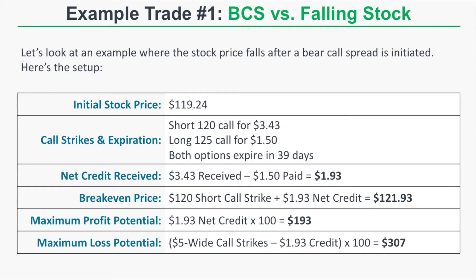With a net credit of $1.93, our break-even price is the short call strike of 120 plus the $1.93 credit, which comes out to $121.93. Our maximum profit potential is if the spread expires worthless, in which case we keep the $1.93 credit — translating to a profit of $193. Our maximum loss potential is $307, from the $5-wide call spread less the $1.93 credit, times 100.